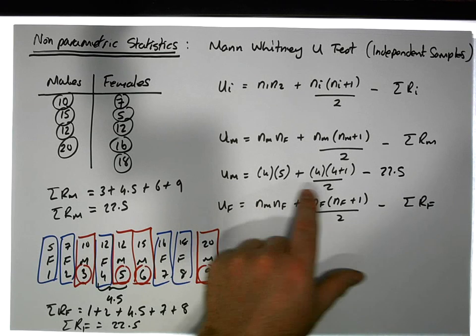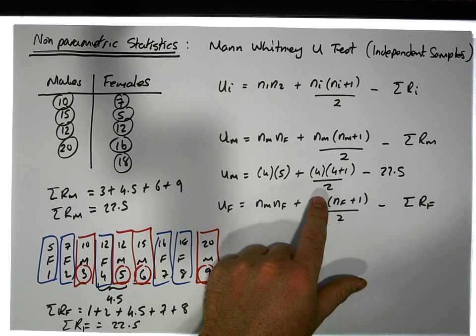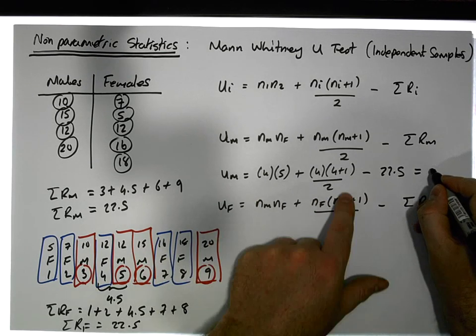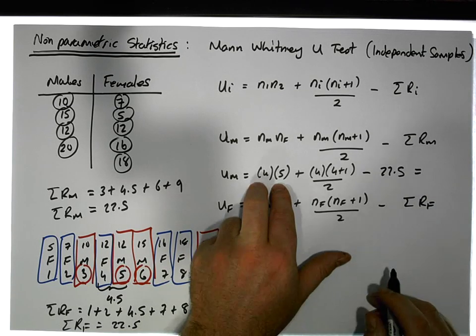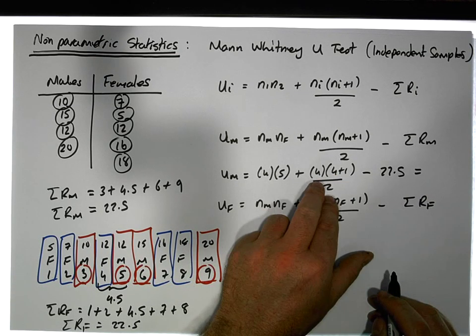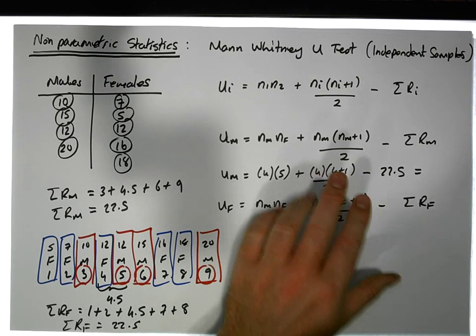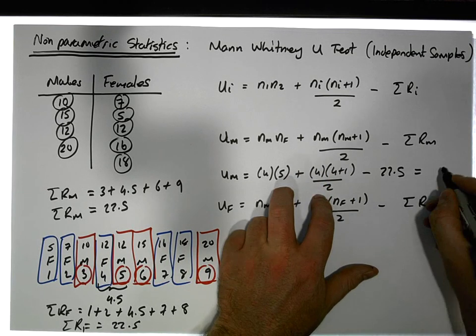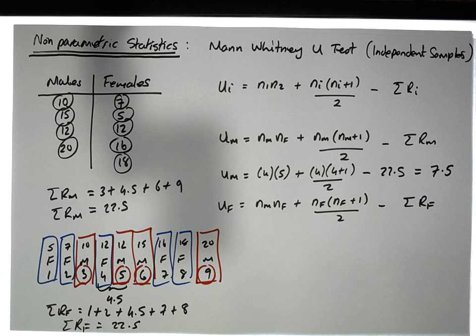Minus the sum of the ranks, which is 22.5. If we work this out, that's 20, and 4 times 5 is 20 divided by 2 gives us 10, so that's 20 plus 10, 30 minus 22.5 gives us 7.5.